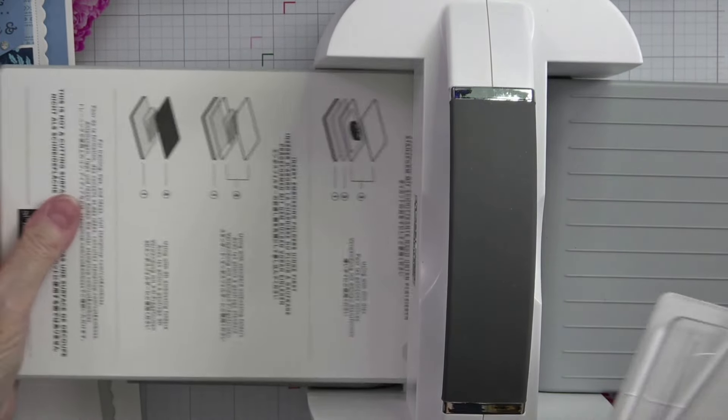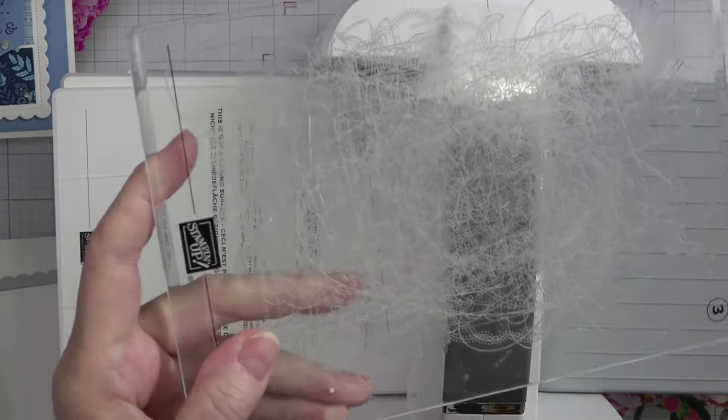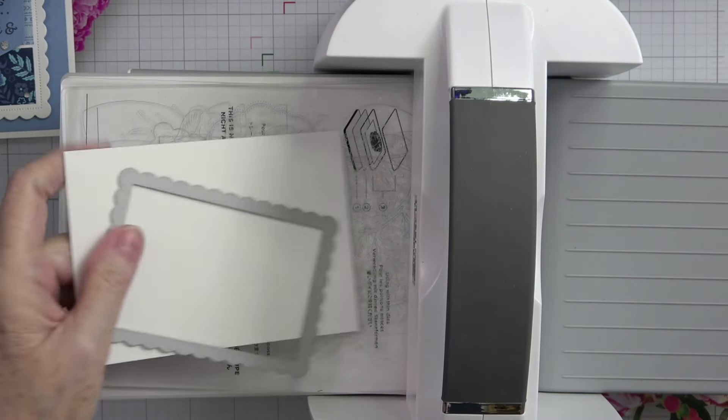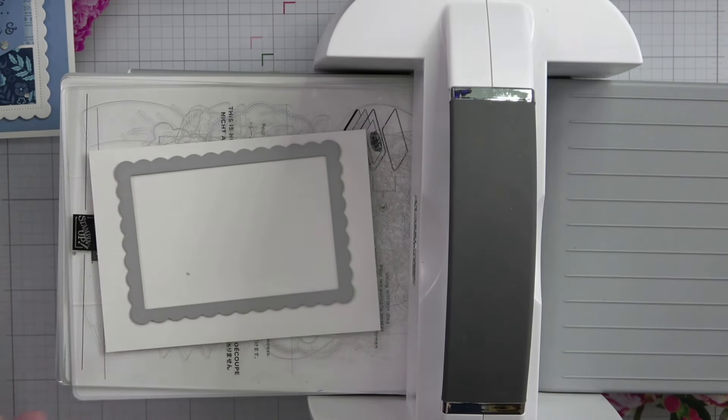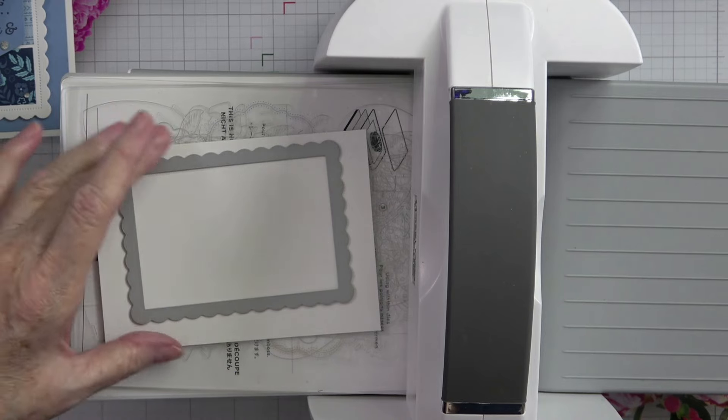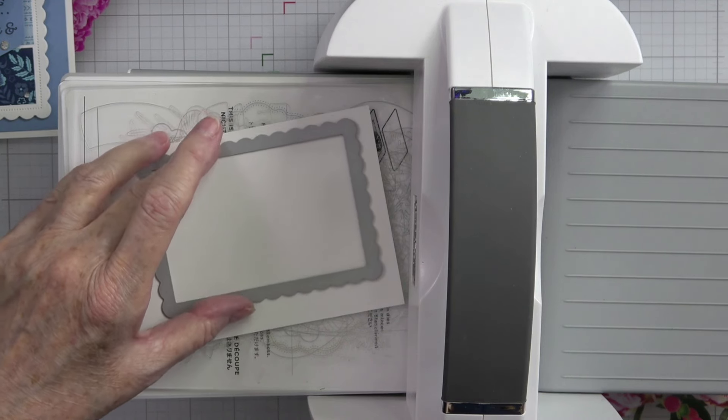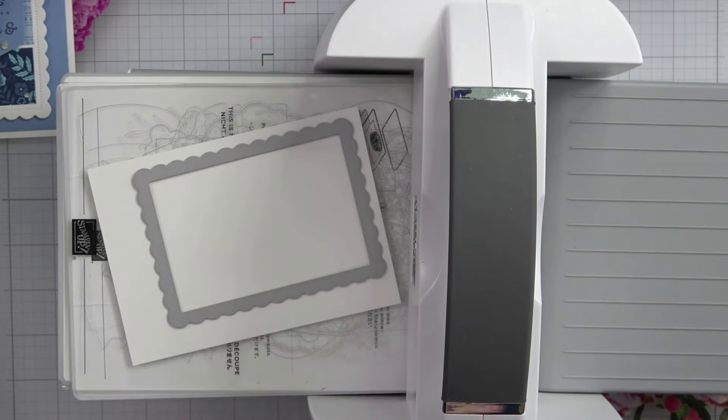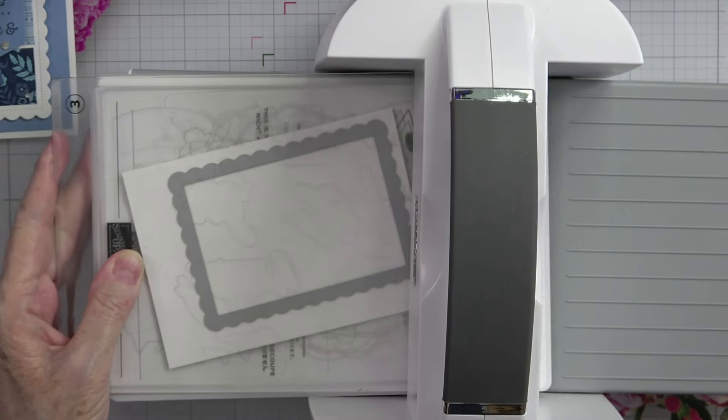And I'm grabbing my base plate number one, my die adapter number two, a really scratched up cut plate number three. Then we're going to put our cardstock down with our die over it. I'm going to angle that just a little bit so it takes a little bit of the stress off as it goes through the machine. I'm going to cover it with another number three plate here and we'll push this through.